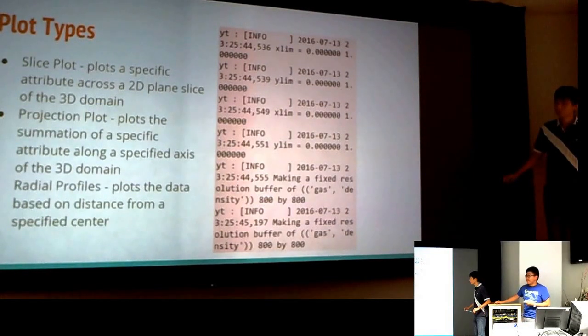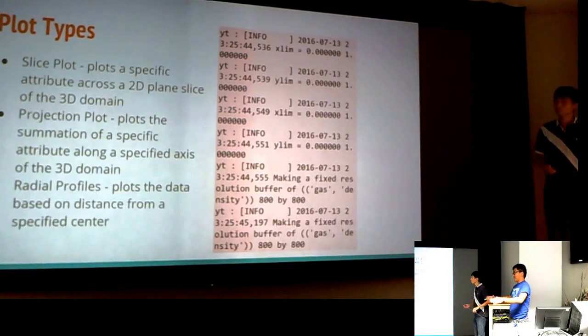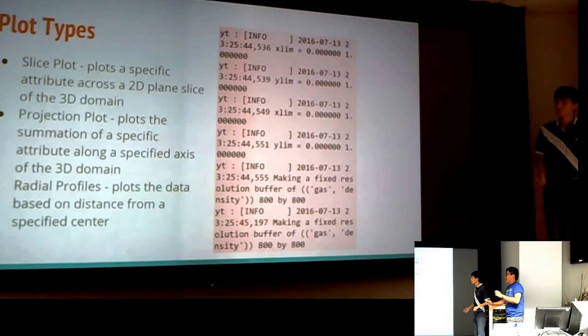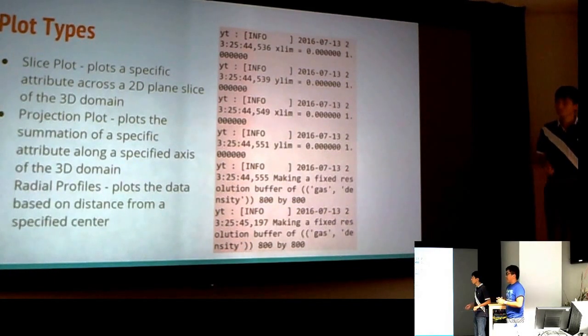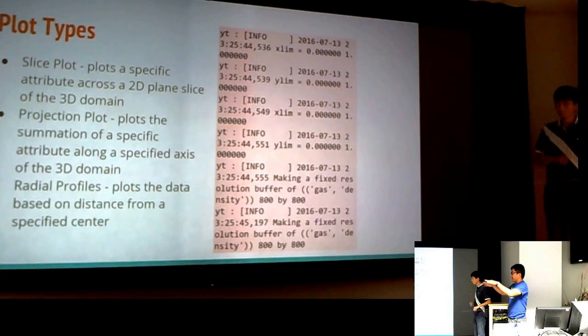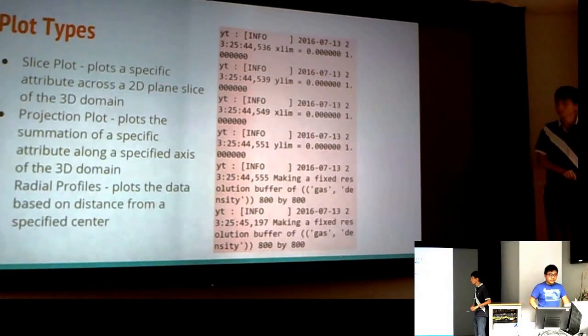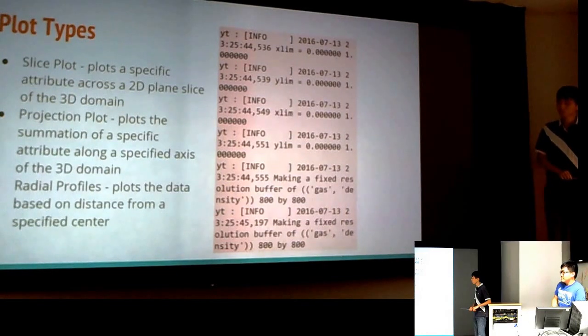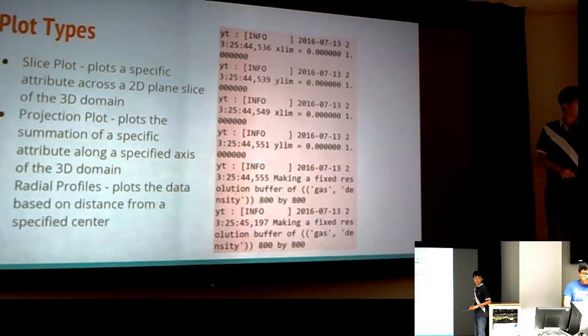So, the first type of plot we have is a slice plot. Which is, you have this domain, this 3D domain, and you say, I want to slice it at this specific spot. You want a specific plane, and it's a matter of precision, right? So, if you want the slice to be over here versus over there, you can see versus a projection plot, which is the entire thing. It kind of, how I like to think of it, it gets smushed, the entire thing gets smushed into a pancake. And then you get to see everything.